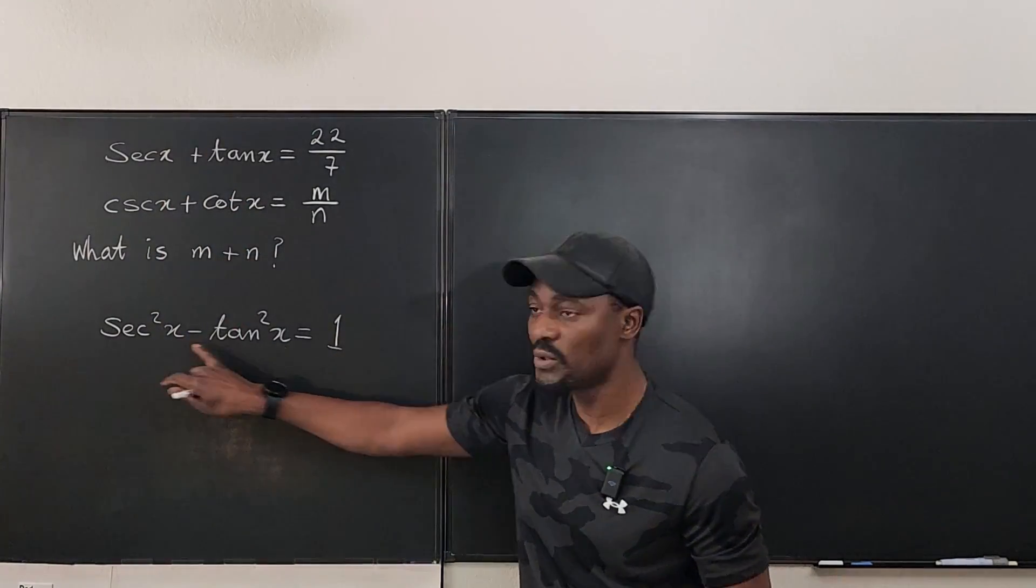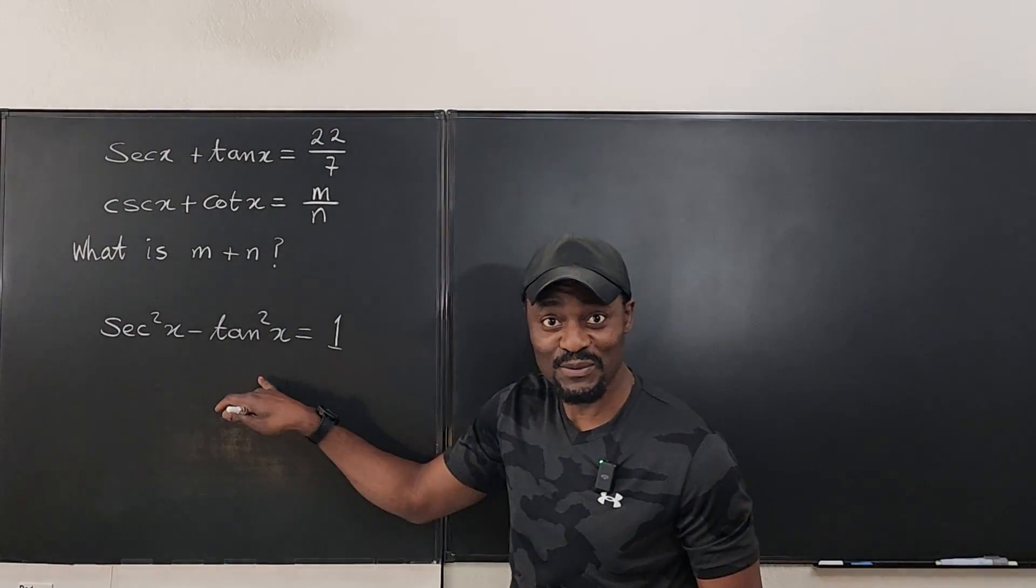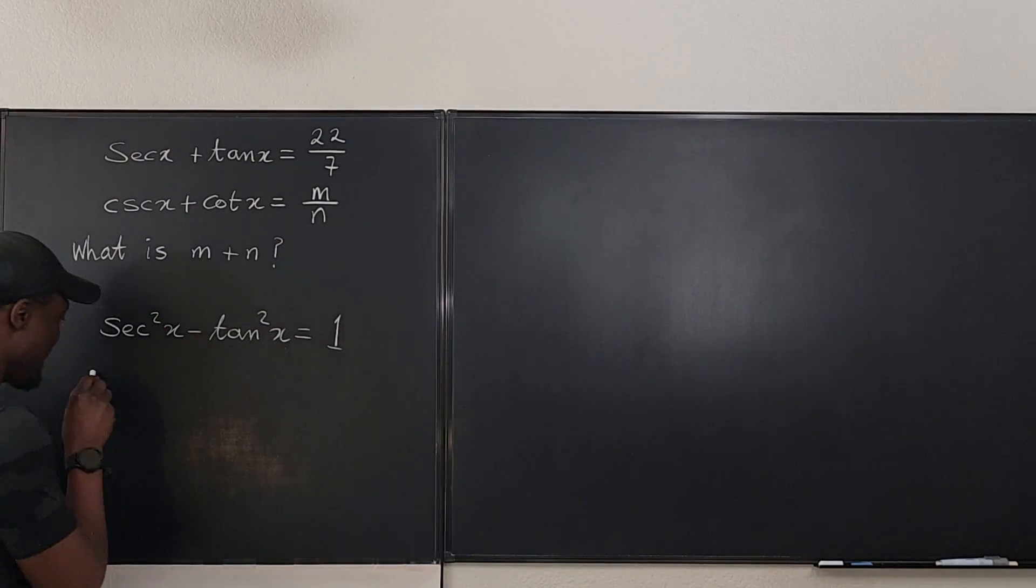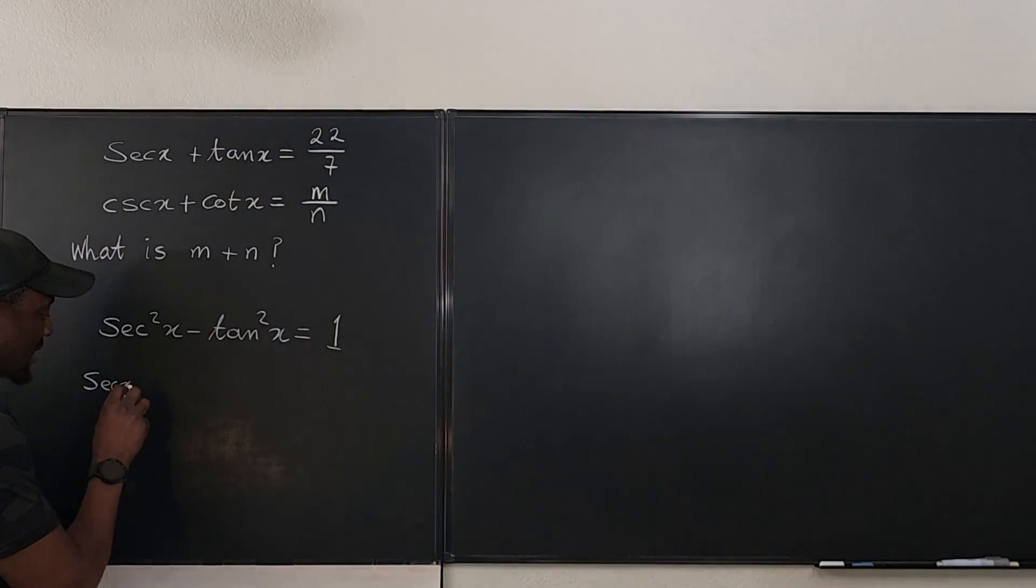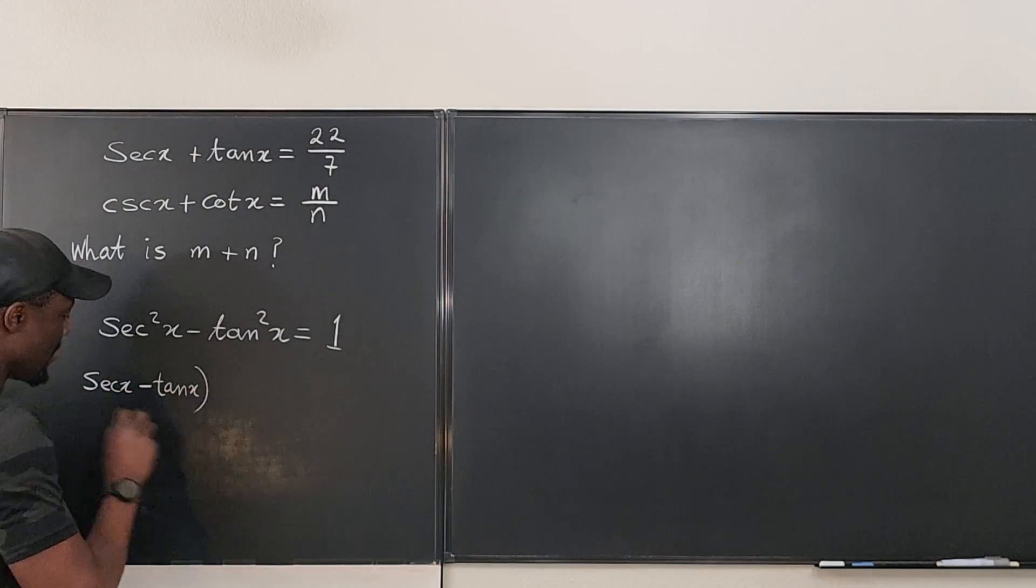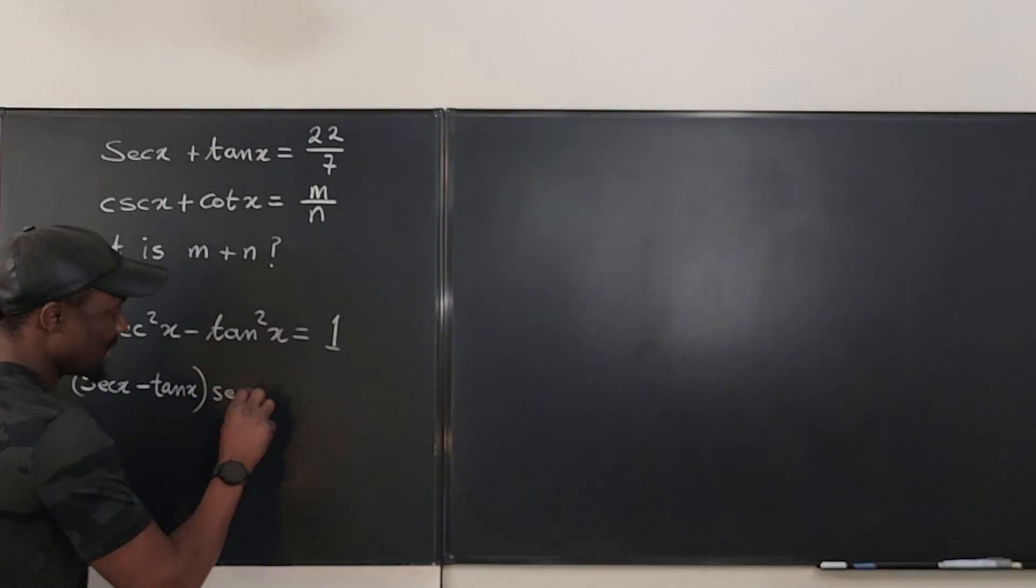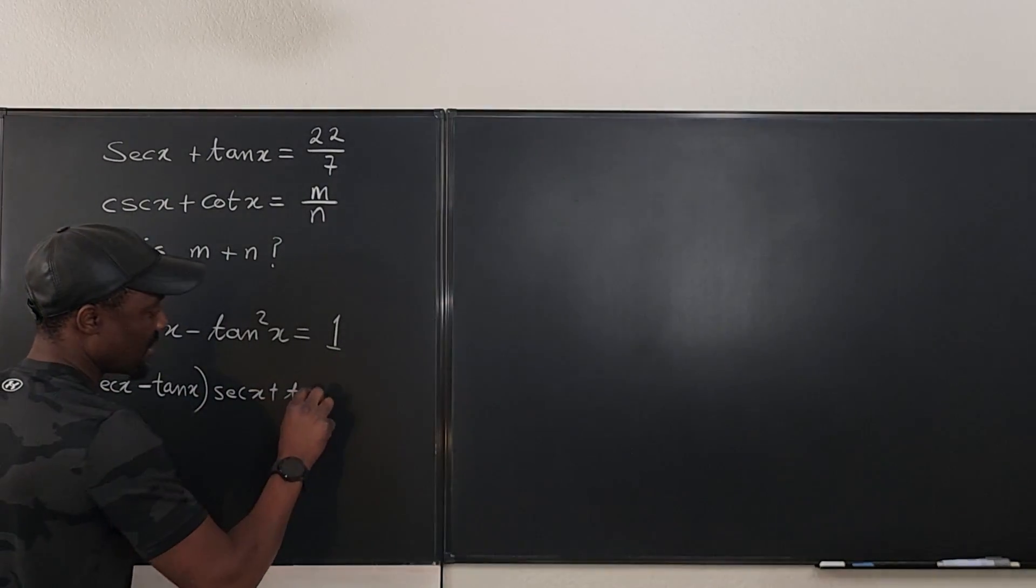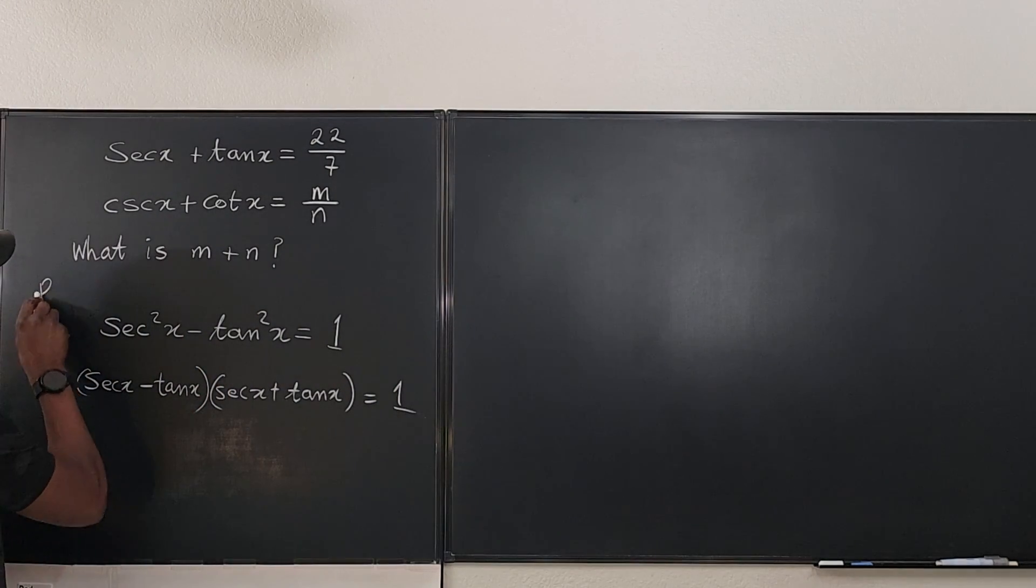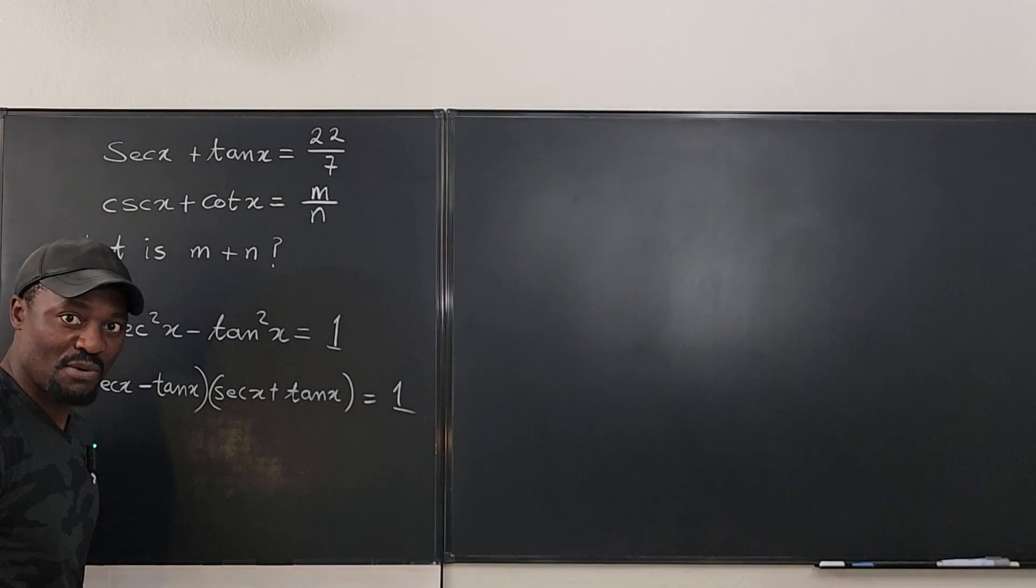Well, we know that this is difference of two squares. And with the difference of two squares, we can write this as secant x minus tan x multiplied by secant x plus tan x. And that is equal to 1. This we know. So we say recall here. And this is the key to solving this problem.